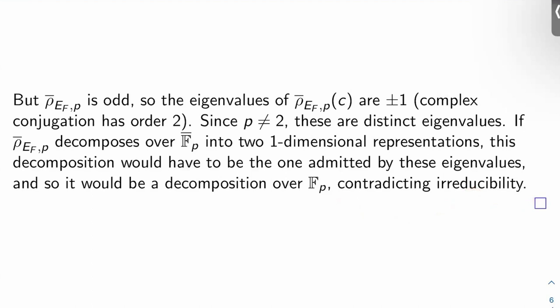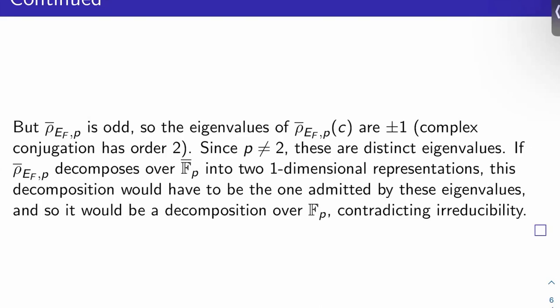So basically, when you have an odd representation like this, and you're working two-dimensionally, and you have oddness plus irreducibility plus the prime is at least 3, and you're working two-dimensionally, then you actually automatically have absolute irreducibility. And I'll be proving a more general fact about this later, way later in chapter 16 of my notes. So there you go.